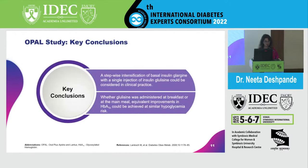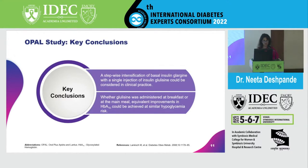This was the OPAL study. The key conclusions were that a stepwise intensification of basal insulin with a single injection of rapid-acting insulin like insulin glulisine could be considered in clinical practice, and if given at the main meal, you could achieve much better A1C without the risk of hypoglycemia — or a similar hypoglycemia risk.